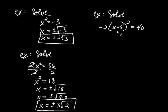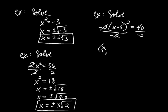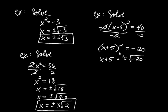This next problem is a little different because there is something being squared, but it's not just x — it's the quantity x plus 5. The same logic applies: you always want to isolate the whole quantity being squared. So I'm going to divide both sides by negative 2, giving us x plus 5 squared equals negative 20. Now we use the square root property: x plus 5 equals plus or minus the square root of negative 20. Whenever you have something squared, the next step is to write that something, no longer squared, equals plus or minus the square root of the right-hand side.